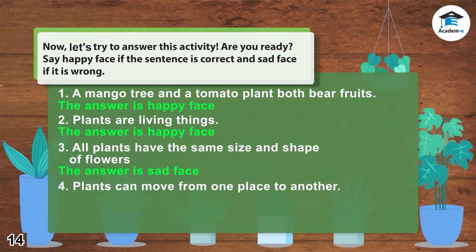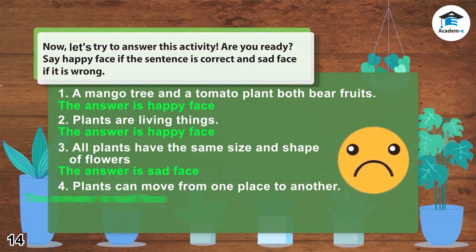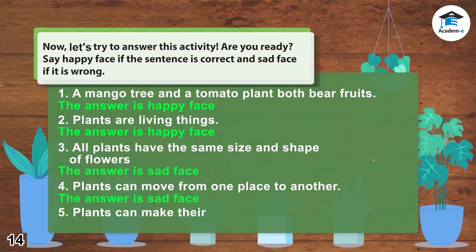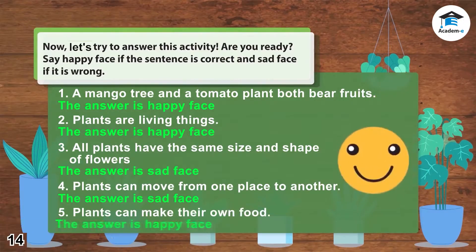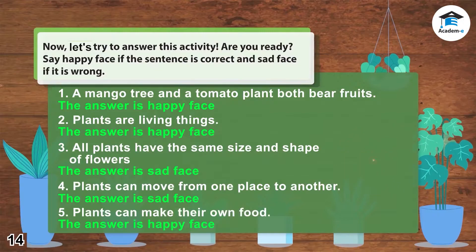4. Plants can move from one place to another. The answer is sad face. 5. Plants can make their own food. The answer is happy face.